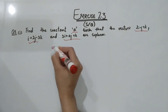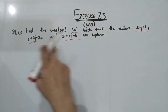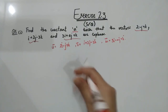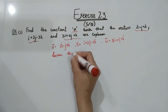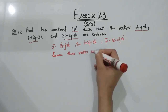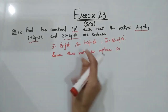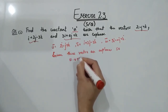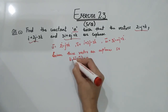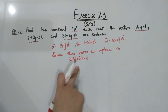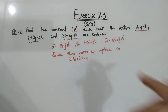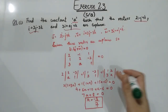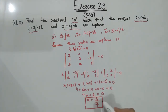Let the three vectors be U, V, and W. Since the vectors are coplanar, the scalar triple product U dot (V cross W) equals zero. To find this, you compute the determinant of the three vectors and set it equal to zero. Solving this equation gives the constant A equal to minus eight over seven.